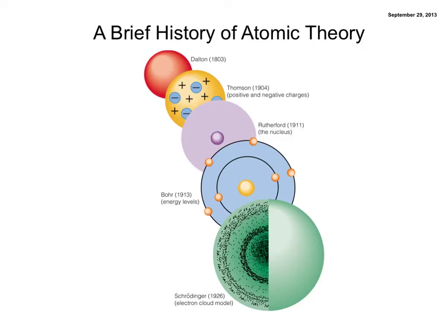About 100 years later, J.J. Thomson talked about a plum pudding model of the atom. He was responsible for discovering the electron, and so he knew that the atom had to have a positive component and a negative component. His idea was that the atom was positively charged with negative electrons embedded in it.